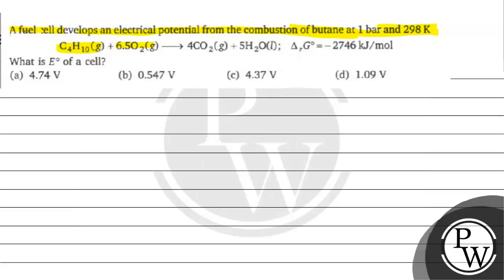With oxygen 13/2 moles of oxygen, four carbon dioxide molecules, and five water molecules. Delta G for the reaction is given as minus 2746 kilojoules per mole. What is the E⁰ of a cell? Option A is 4.74 volts, option B is 0.547 volts, option C is 4.37 volts, option D is 1.09 volts.